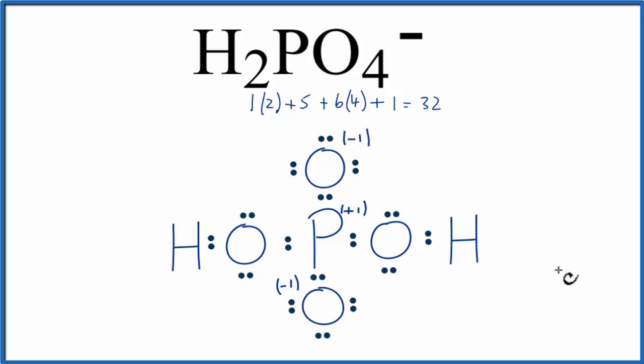We'd like the formal charges to be as close to 0 as possible, or in this case as close to minus 1, because that's the charge on this ion. So to do that, we can move electrons around as long as we keep using 32. If we took this pair of electrons right here and moved it to the center to form a double bond with phosphorus...